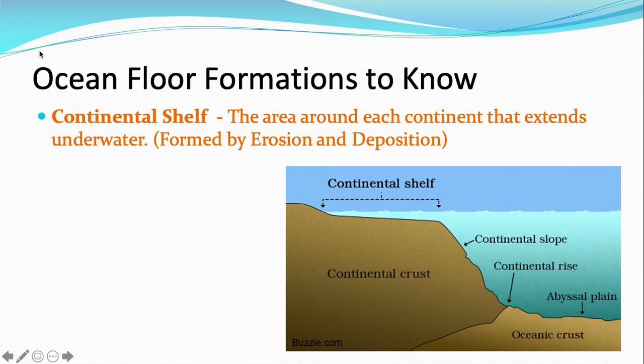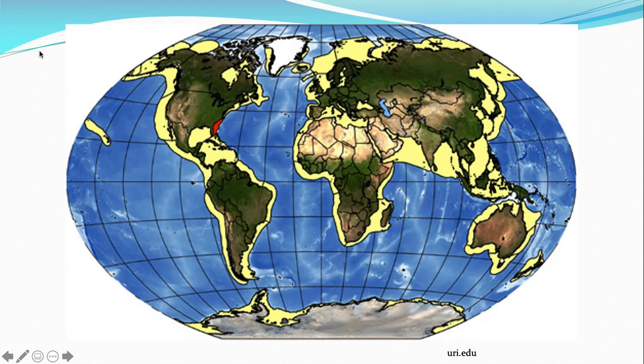The continental shelf is the area around each continent that extends underwater. That's formed by the erosion and deposition of continental materials. Rivers carry sediments to the continental shelf and deposit them there, so it builds up, extending outward from the continents. Every continent has a continental shelf extending some distance underwater.